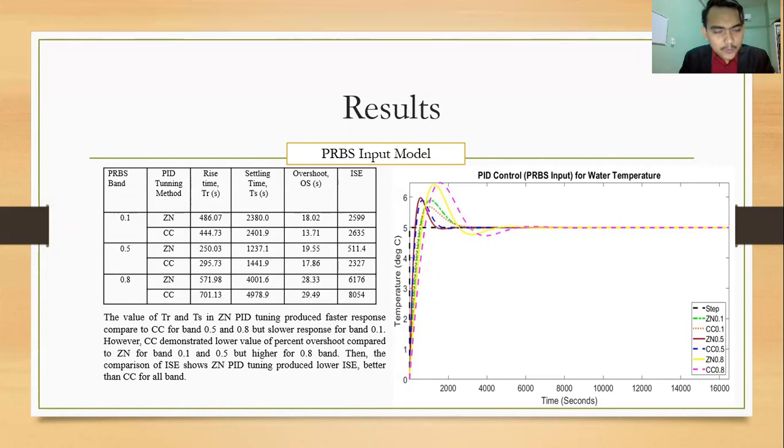So the value of time rise or TR and time settling TS in Ziegler-Nichols PID tuning shows faster response compared to Cohen-Coon PID tuning for band 0.5 and 0.8 but slower response for band 0.1.